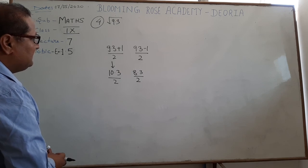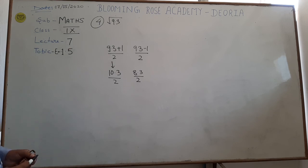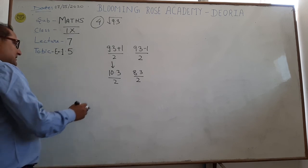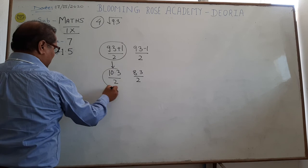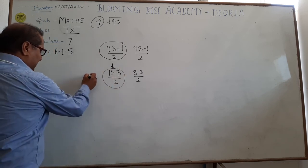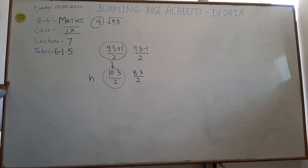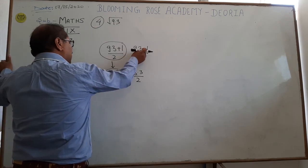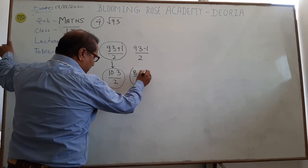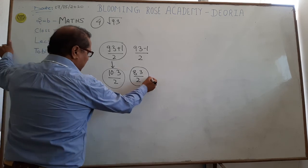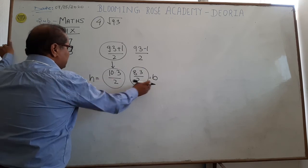Students, you have to know the condition through the right angle triangle. In the right angle triangle, this 9.3 plus 1 by 2, it means 10.3 by 2 is taken as the hypotenuse edge. And this 9.3 minus 1 by 2, after solving, we are getting 8.3 by 2. It is taken as base B. So this is the hypotenuse and this is the base.